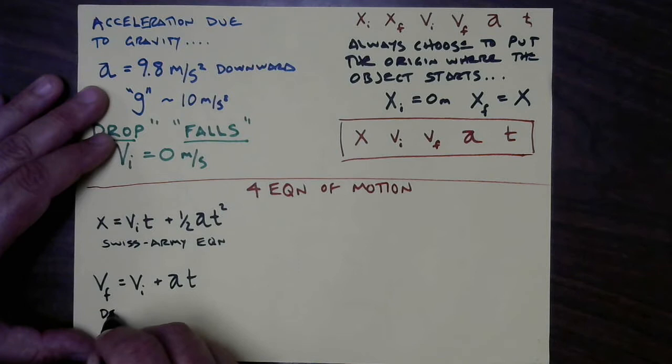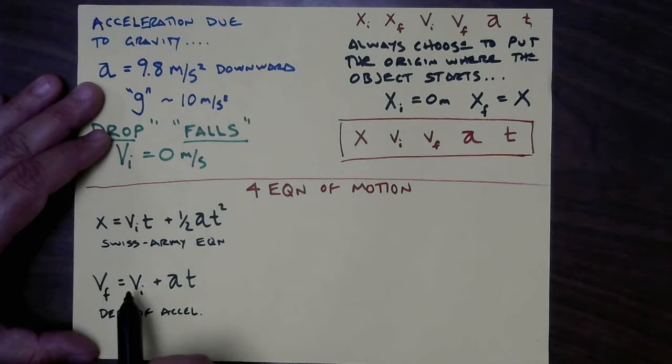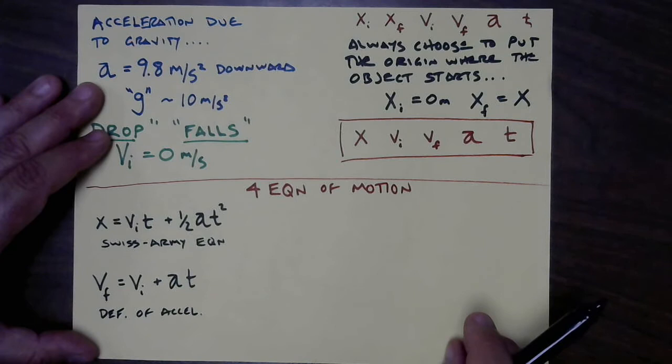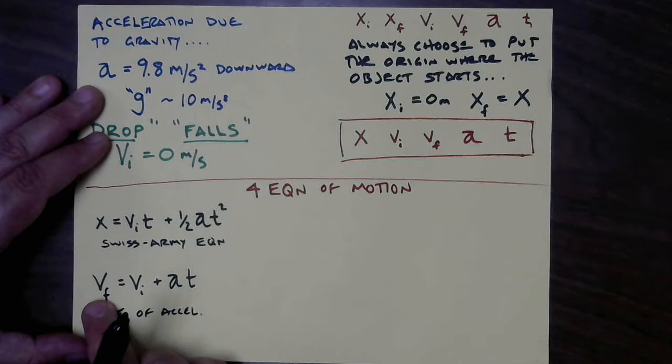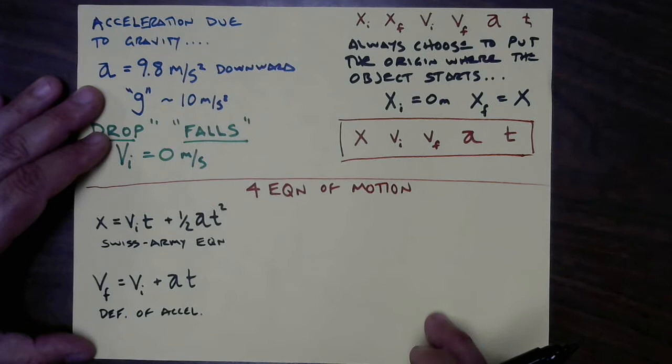I call it the Swiss Army equation because it has the most variables and is very useful — like a Swiss Army knife. The second equation of motion is that your final velocity equals your initial velocity plus acceleration times time. I call this the 'definition of acceleration' because it comes from rearranging a = Δv/t. It reads: your final velocity equals your starting velocity plus the effect of any acceleration.